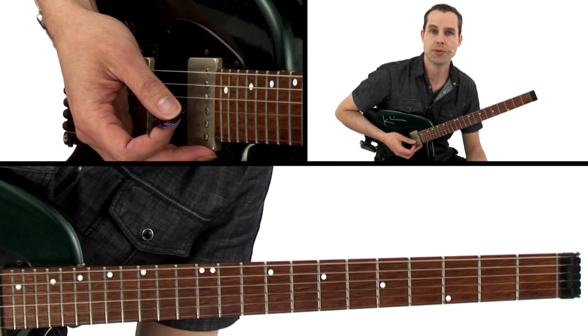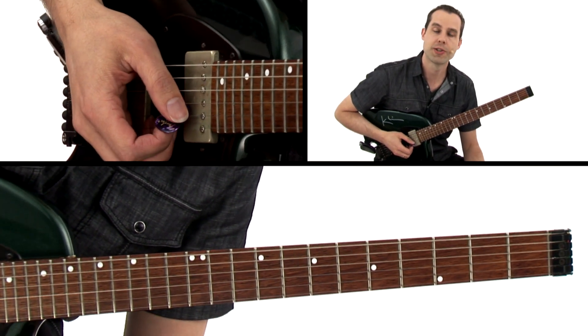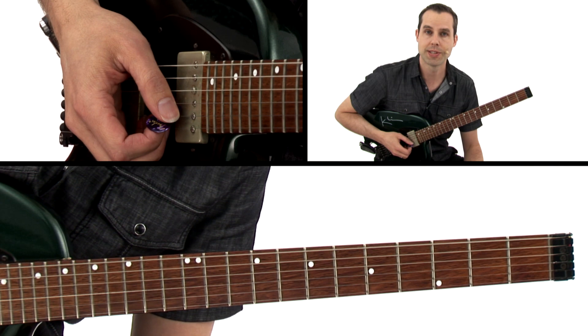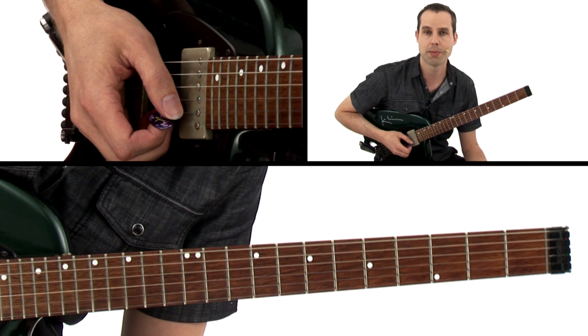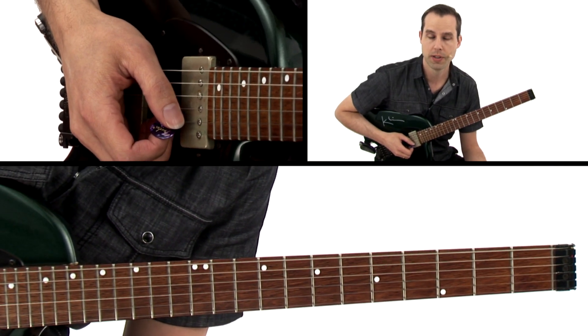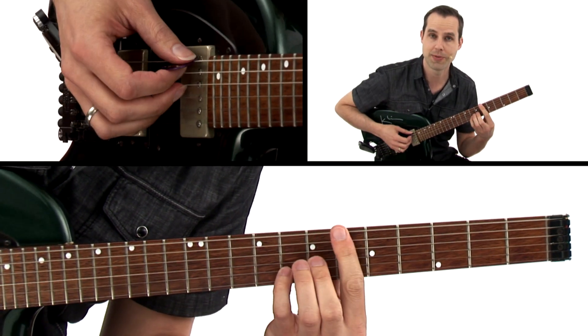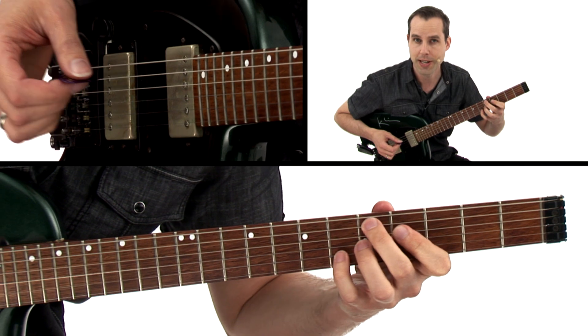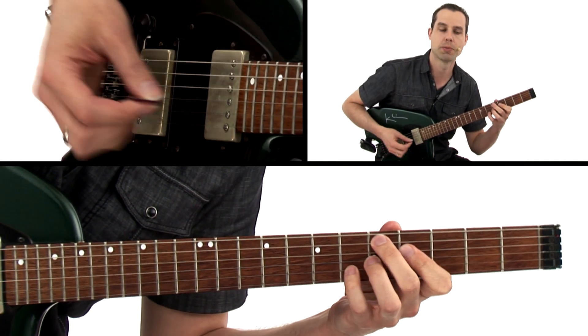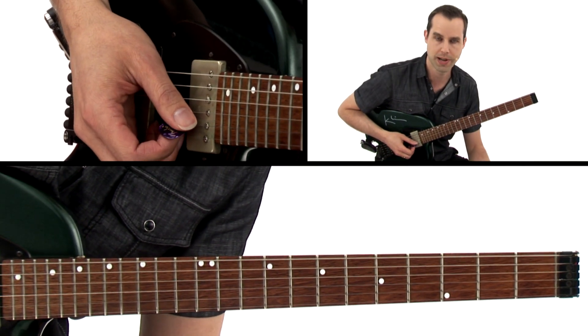So that's a 12-bar blues in F. Now this is not your traditional 1-4-5 blues, this is adding some chords. So this is typically called a jazz blues. When we add that F7 sharp 9 going to the B-flat, and also when we add that D7 sharp 9 to the progression, that makes it more of a jazz blues, that's what people usually refer to it as.